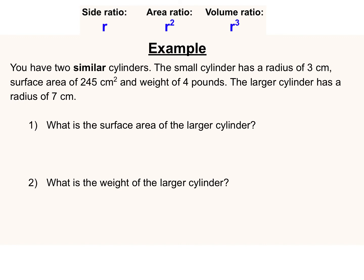So let's take a look at one more example. In this one, we have two similar cylinders. The small cylinder has a radius of 3 centimeters, a surface area of 245 square centimeters, and a weight of 4 pounds. We also know the larger cylinder has a radius of 7 centimeters. So from that key information, that gives us the radius ratio. In other words, the side ratio, the one-dimensional length ratio of these two cylinders.